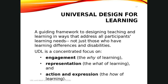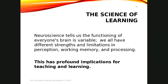When we design learning — whether for a workshop, a course, or even a handout your organization is passing to individuals — you think about how people will engage in the information, how that information is being represented, and in what way action and expression takes place. We know that the brain has very specific functions in perception, working memory, and processing. When we acknowledge that we all have different strengths and limitations in how we process, in the ways we access working memory, and the way we perceive information, it causes us to think more carefully about what we're designing.